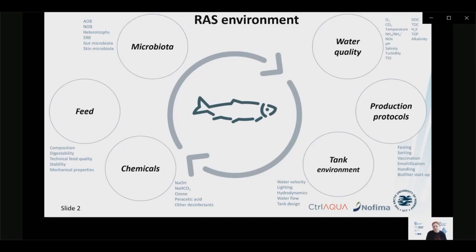We also add chemicals to our water to buffer it or disinfect it. Tank environment — with its velocity, hydrodynamics, lighting, and design — along with production protocols affecting system stability, and of course water quality with its many characteristics that are regularly monitored in daily operation, all interact. The complexity of the RAS environment is further increased by the fact that all components interact with each other, affecting and being affected by one or more other components.